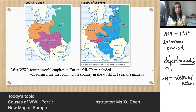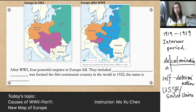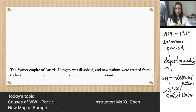Tsarist Russia formed the first communist country in the world in 1922 — the USSR, or Soviet Union. This is also the reason why even though Russia belonged to the winning team, they still had to make some changes, because in 1917 they had the October Revolution and withdrew from the First World War early. This is why they still had to pay something — they had to accept the idea of Woodrow Wilson's self-determination.